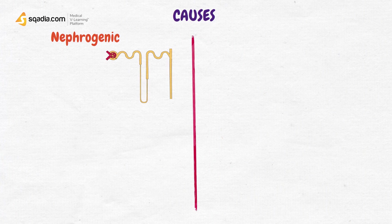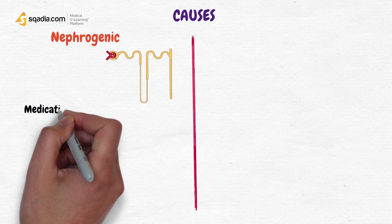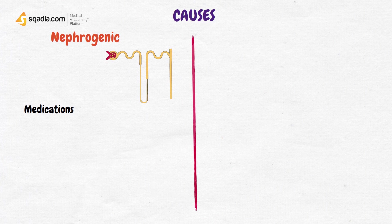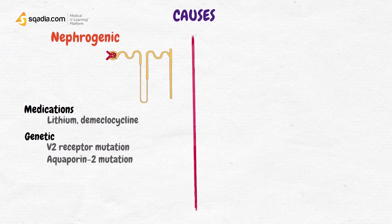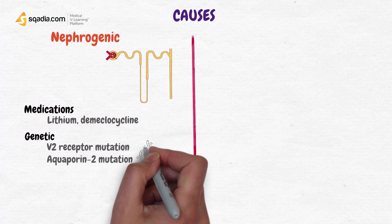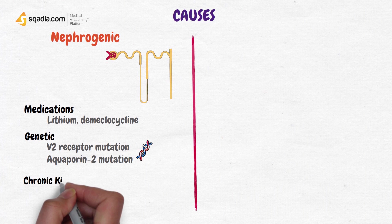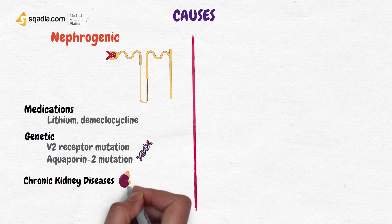Nephrogenic diabetes insipidus can occur due to medications such as lithium or demetrocycline, or it can occur due to mutations of V-2 receptors or aquaporin-2 receptors located in the collecting duct. Chronic kidney diseases can also alter the response of kidneys to ADH,